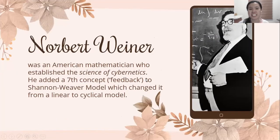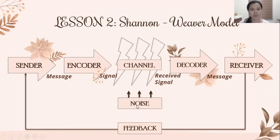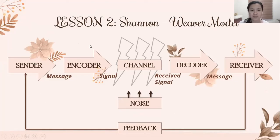Here comes Norbert Wiener, who added a seventh concept to the Shannon-Weaver model, which changed it from a linear model to a cyclical or interactive model of communication. Here is the modified model of Shannon-Weaver. Wiener added the element of feedback. So from the sender, we have the encoder, the channel, the noise, the decoder, the receiver, and additionally, we have feedback.